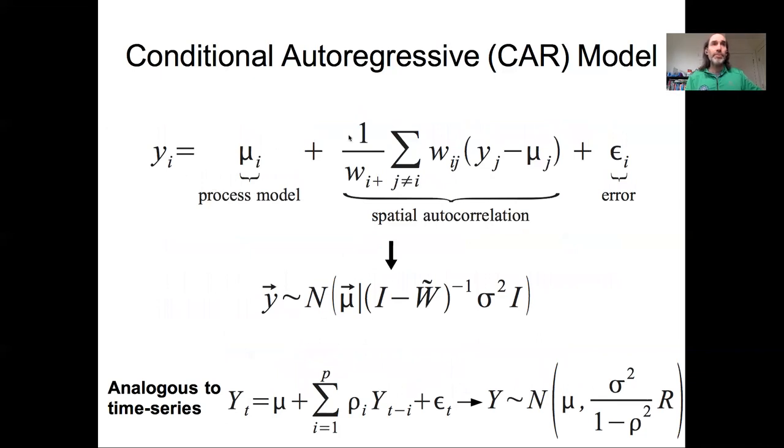So like we did it with that spatial kriging model, we're going to take this overall model and we're going to rewrite it in terms of a multivariate normal distribution that involves a vector of observations, a vector of predictions from our process model, and then a covariance matrix that includes both this spatial spatially autocorrelated component, this w tilde, which again is that w adjacency matrix normalized so that each row sums to one, and then this identity matrix which when multiplied out by sigma provides that nugget. So we have this nugget component and we have this spatially autocorrelated component.